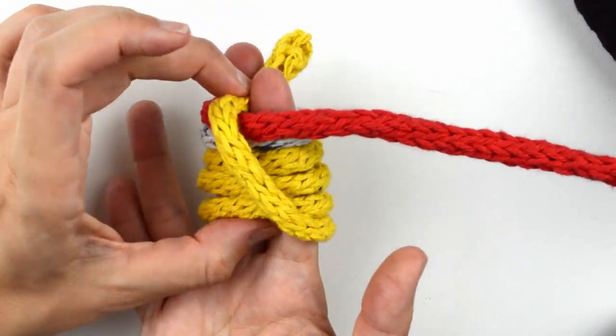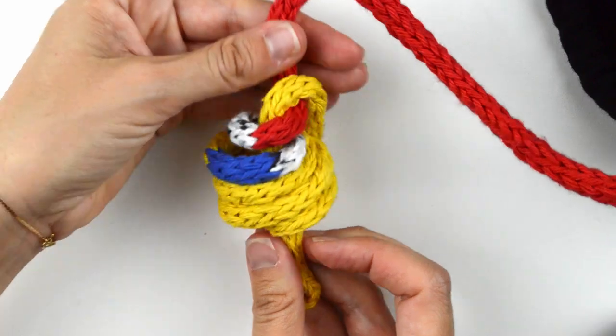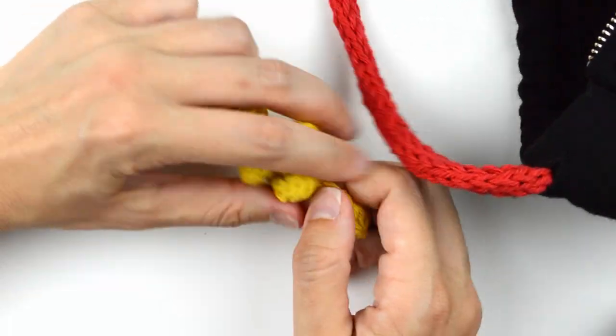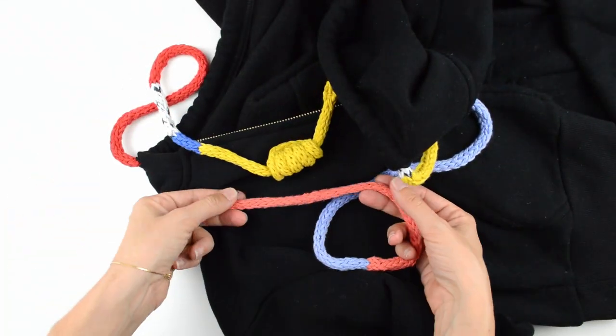And then bring your tail through the top. Pull both ends and sort of massage the rounds into place. I don't pull too hard because I want to keep the barrel knot looking nice and fluffy. Then you'll just repeat at the other end and the drawstring I-cord is complete.